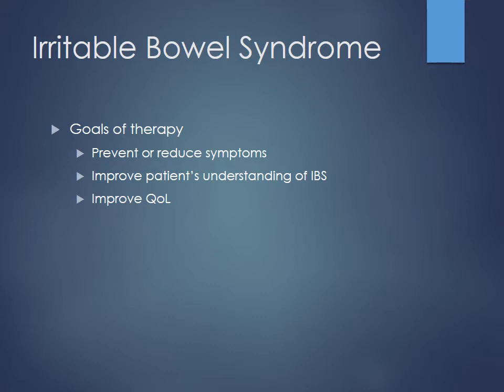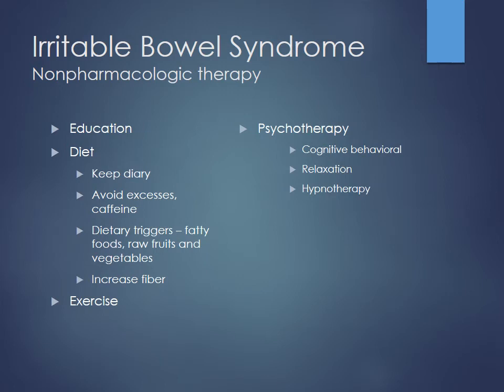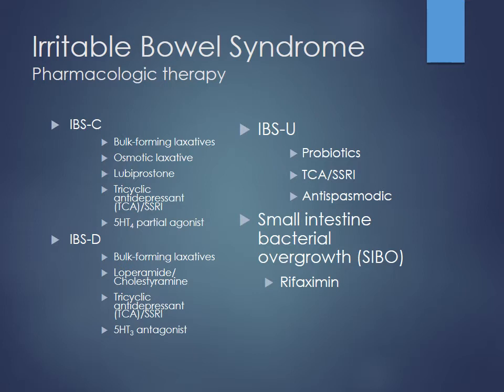Goals for IBS include preventing or reducing symptoms, improving the patient's understanding of their triggers to help avoid episodes, and improving quality of life. Non-pharmacologic therapy includes education, keeping a dietary diary to identify triggers, avoiding excess alcohol and caffeine, increasing fiber intake — beneficial for both diarrhea and constipation — regular exercise, and psychotherapy for some patients.